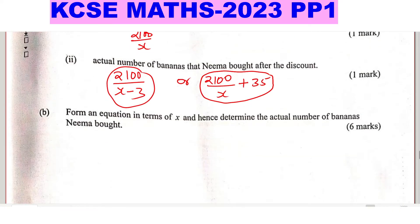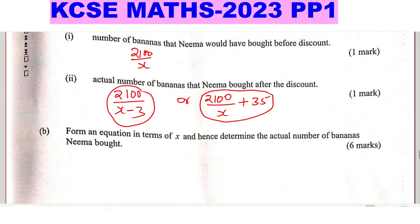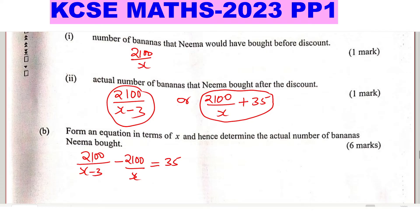Part B: Form an equation in terms of X and hence determine the actual number of bananas. Using the expressions from Part A, we subtract the number of bananas before the discount from the number after the discount, and set that equal to 35. So: 2100/(X minus 3) minus 2100/X equals 35, because after the discount she was able to buy 35 more.